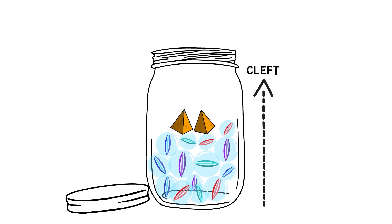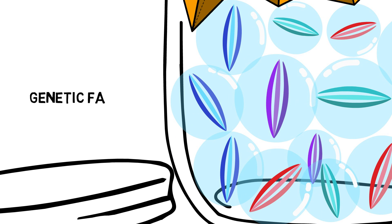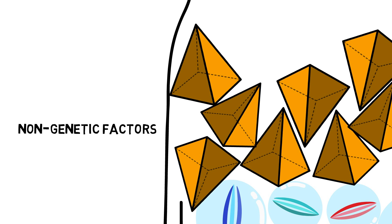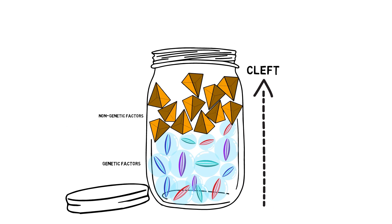The things a baby experiences as it grows in the womb are these triangular blocks. They fall into the jar during early pregnancy. For some people, the marbles and triangular blocks will fill up the jar and they'll develop a cleft.